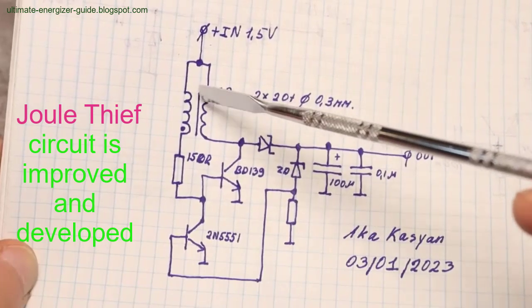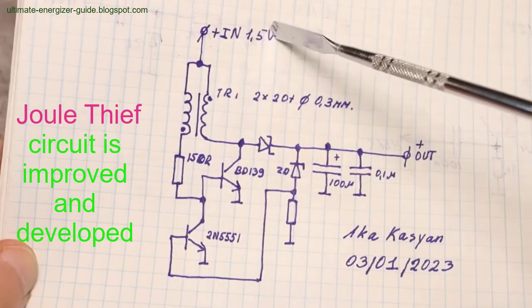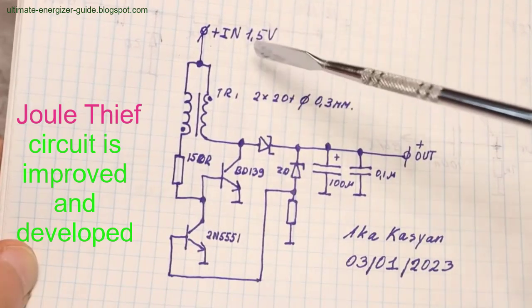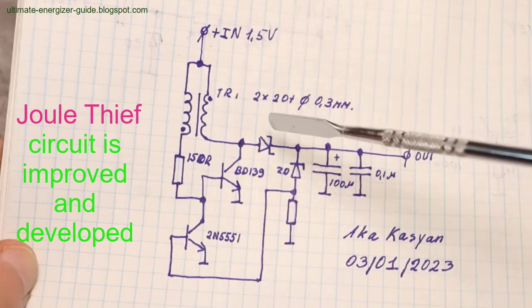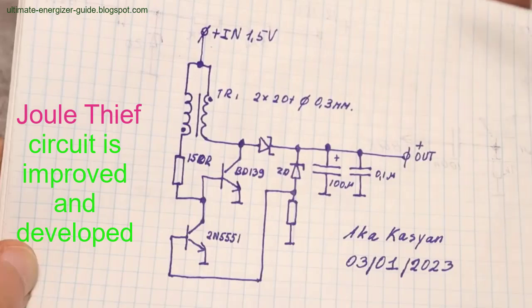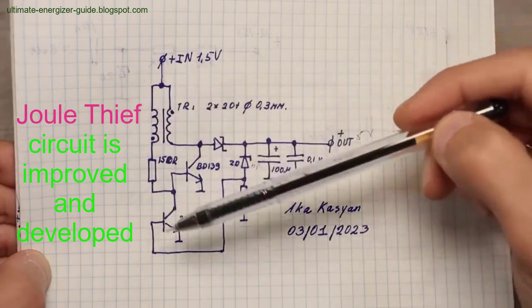The eternal light circuit from the Joule Thief represents a fascinating intersection of innovative engineering and alternative scientific theories. By leveraging the principles of ether physics, this simple yet powerful circuit offers a glimpse into the potential of free energy.